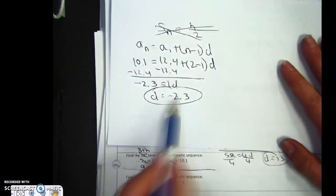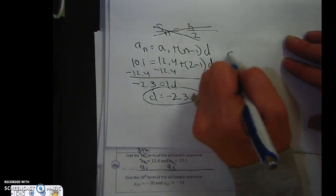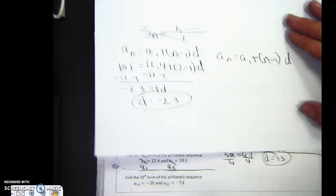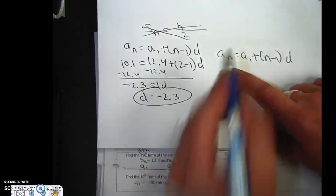Now that I have my pattern, I can find my fake eighth term, which is really my tenth term. So a sub n equals a1, n minus 1 times d.